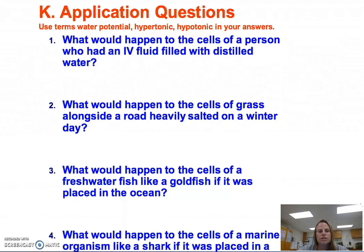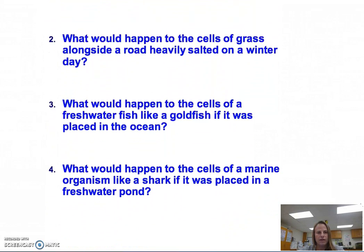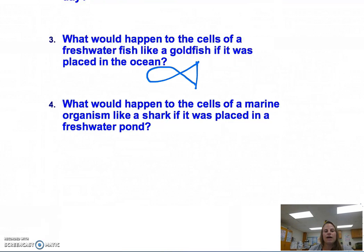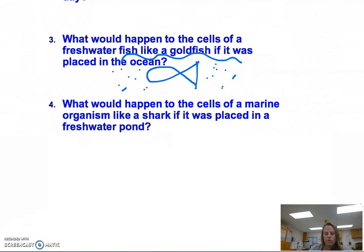Here are some interesting application questions that further explain how osmosis is applied in our everyday lives. Questions one and two we've already tackled, so let's look at question three: what would happen to the cells of a freshwater fish if it was placed in the ocean? If I have a freshwater fish that isn't used to an environment with lots of salt, what's going to potentially happen to the fish?